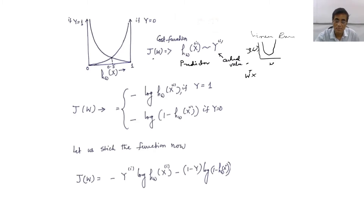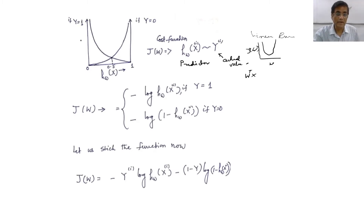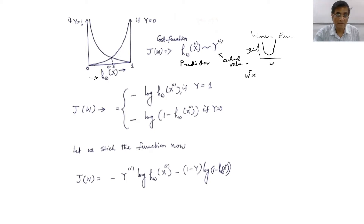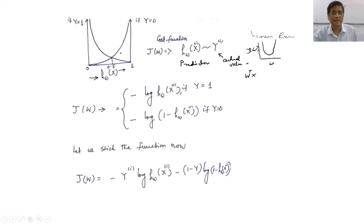We are designing a cost function J(W) that finds the difference between the predicted and actual values. Here is the trick: on the diagram, the y-axis on one side represents y equals 1, and the other represents y equals 0. The predictor h(x; w), since it calculates probability, has values between 0 and 1. We are looking at the exponential family of functions for this purpose.